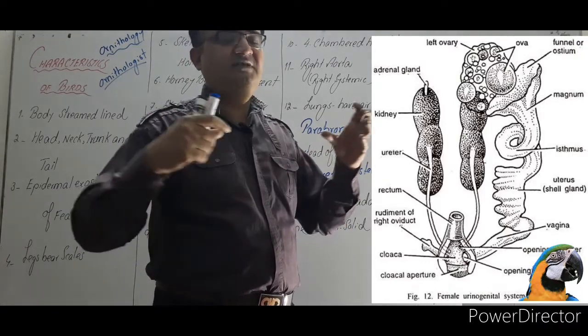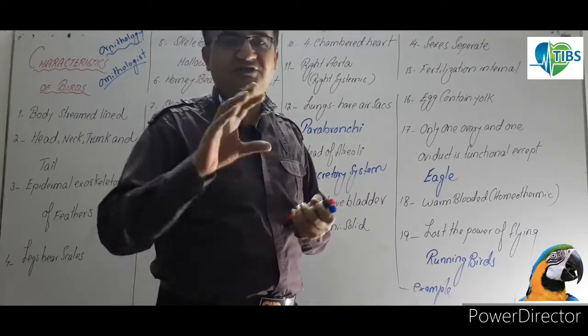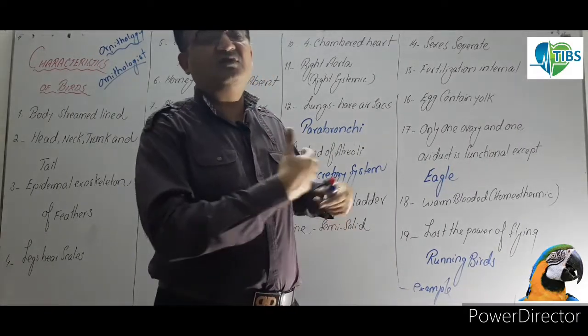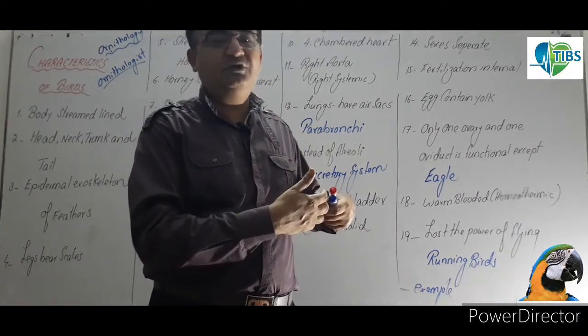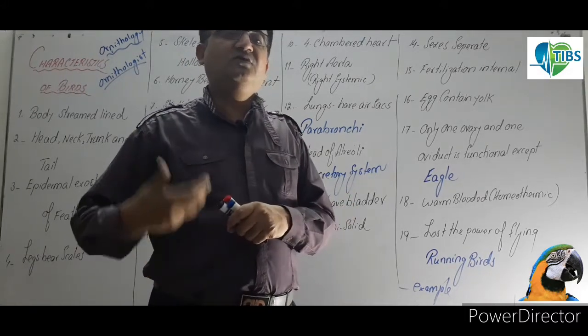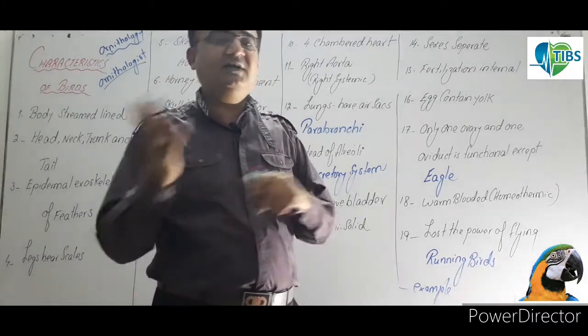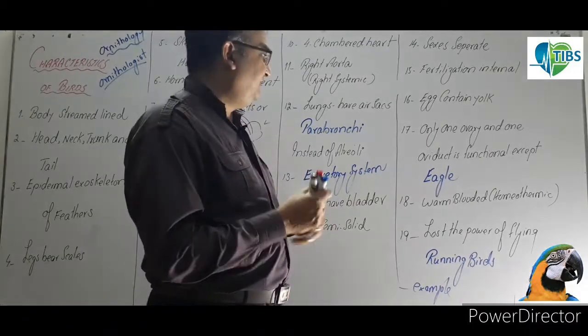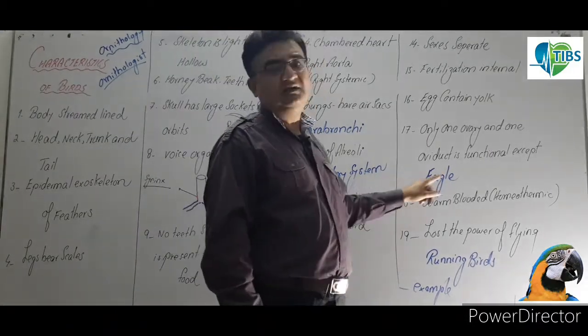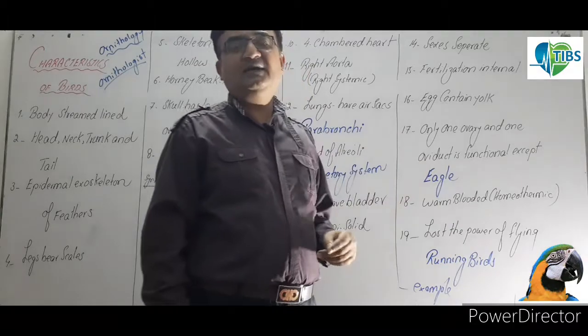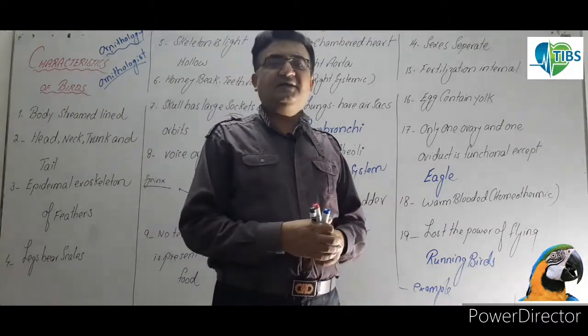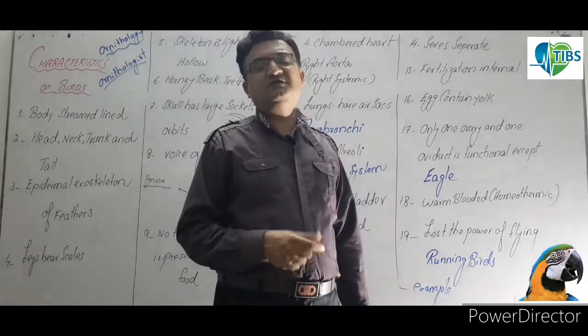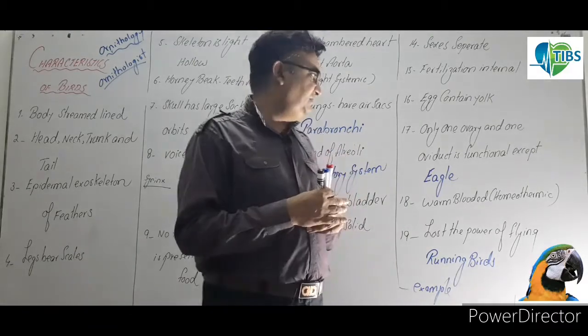The right one regresses and becomes non-functional. So the left one is working and producing eggs, the right one undergoes regression. There are two but only one is functional. But here's an MCQ: eagle is the only case where both the ovaries are functional and both the oviducts are functional. Very important.